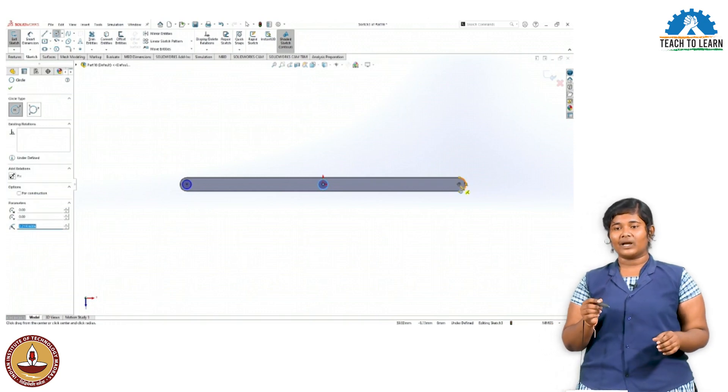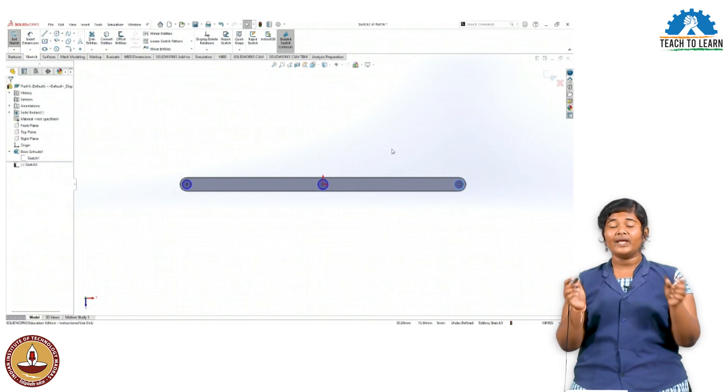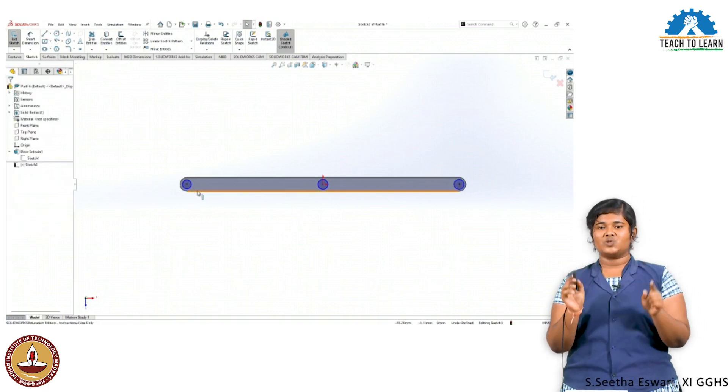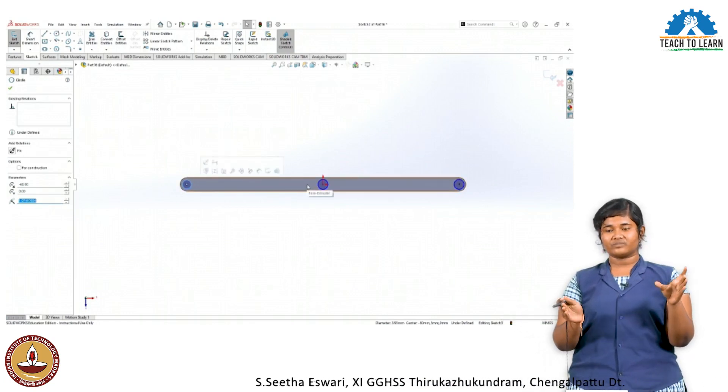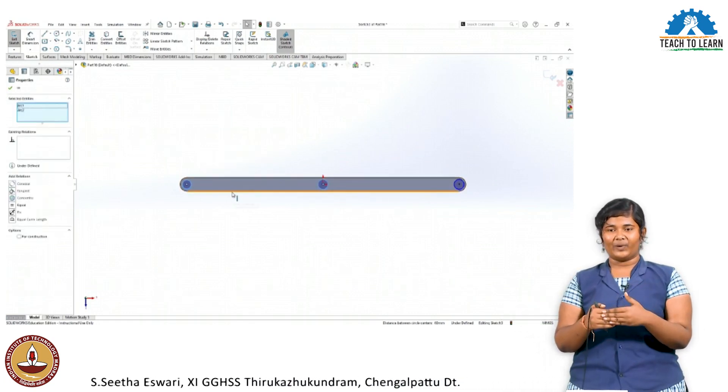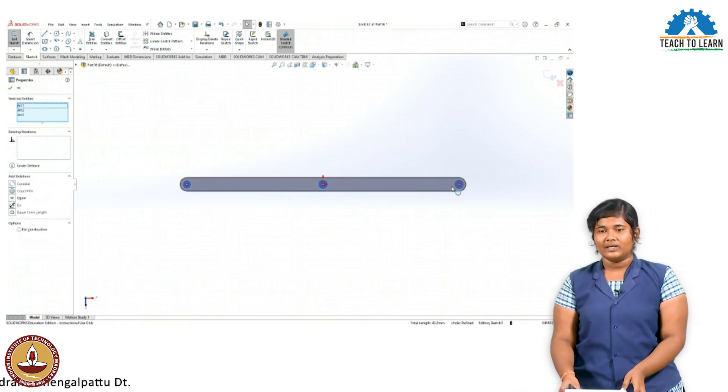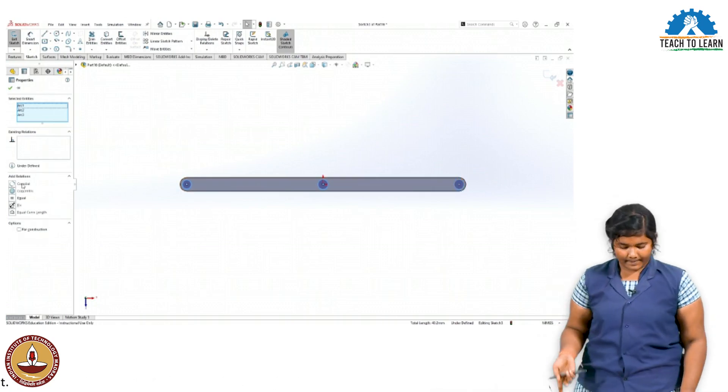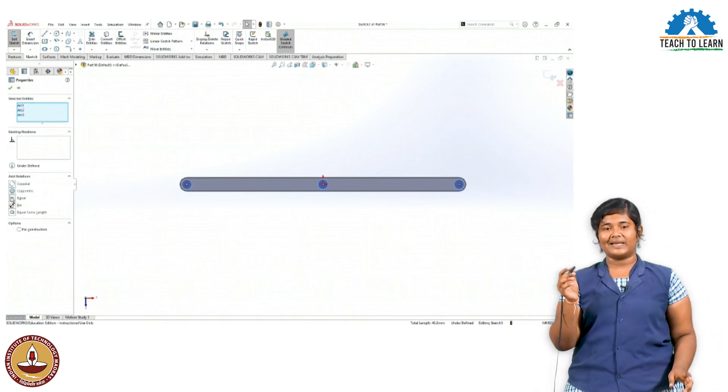Finally, I use fillet to add radius and smooth out all the edges. After completing the design, I save the file and export it for slicing, which will then be transferred to the 3D printer.